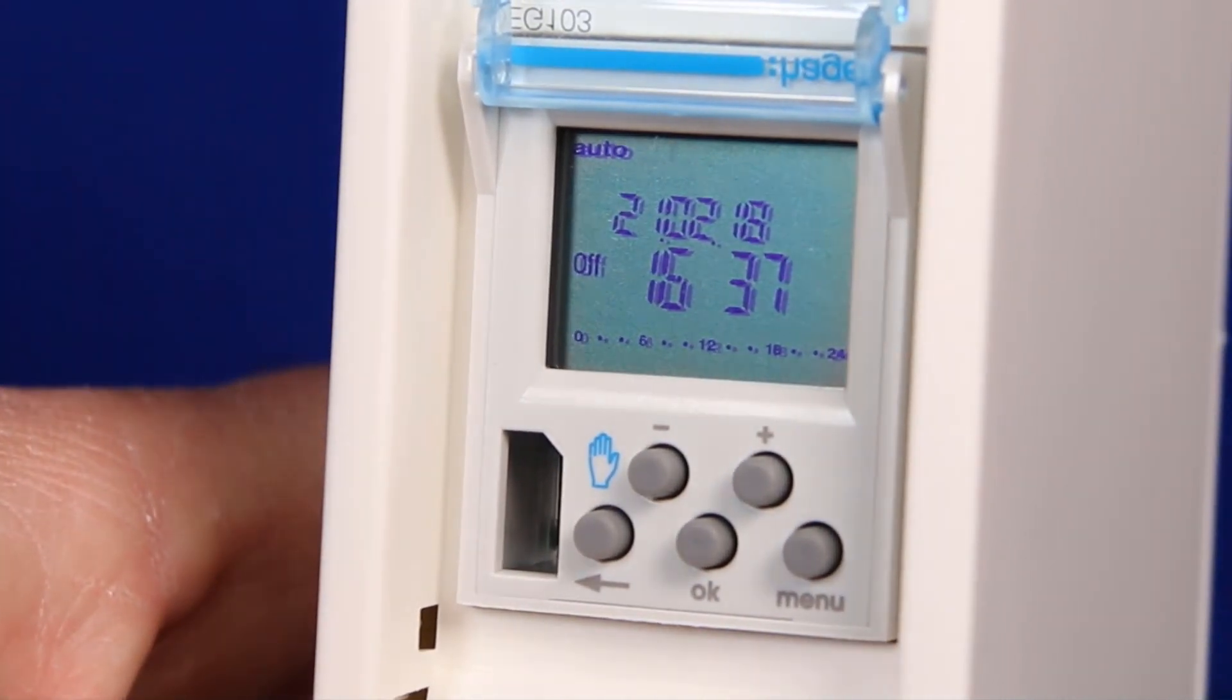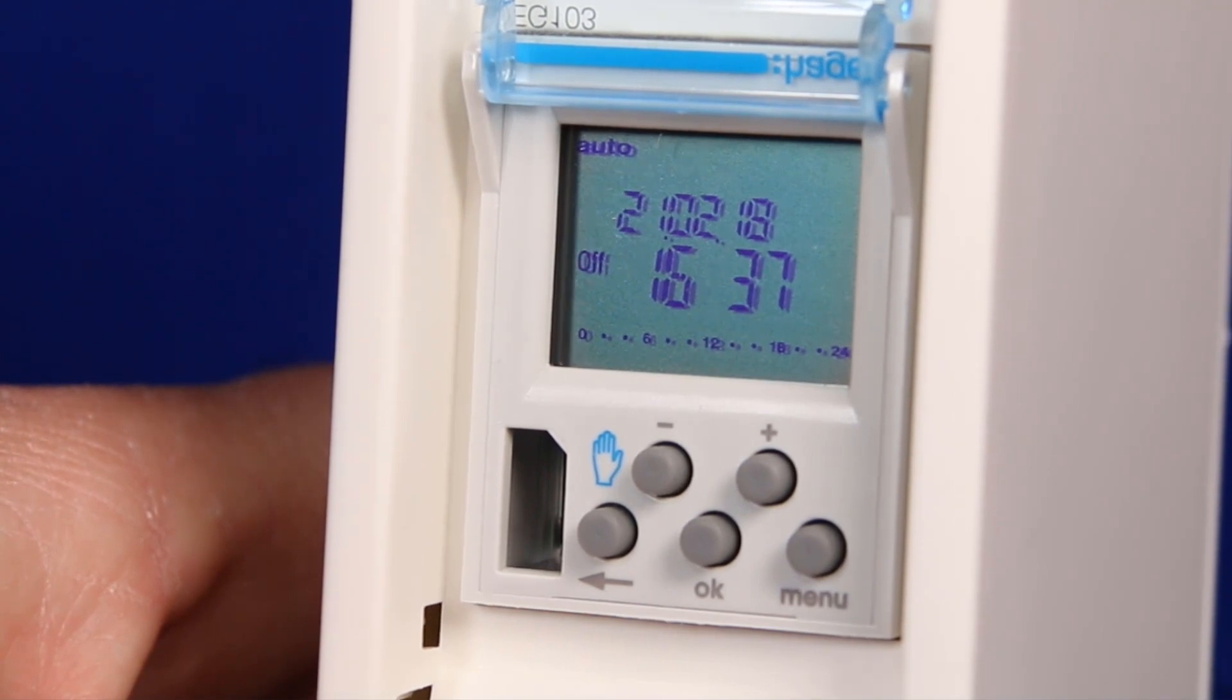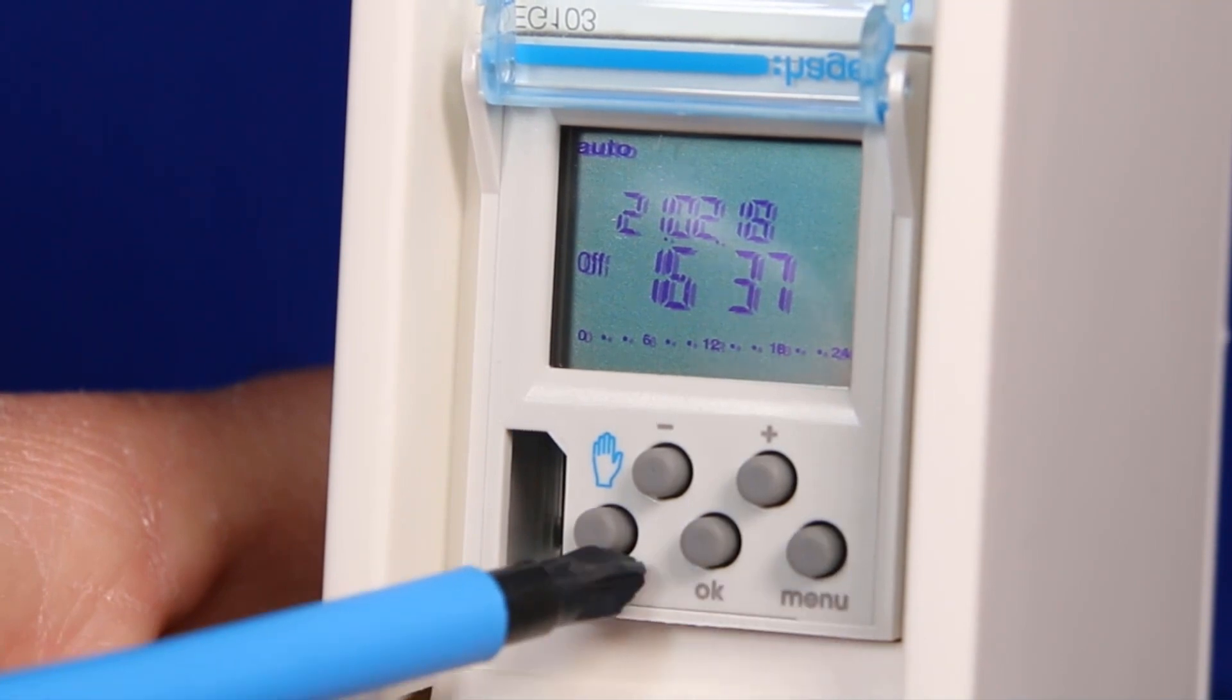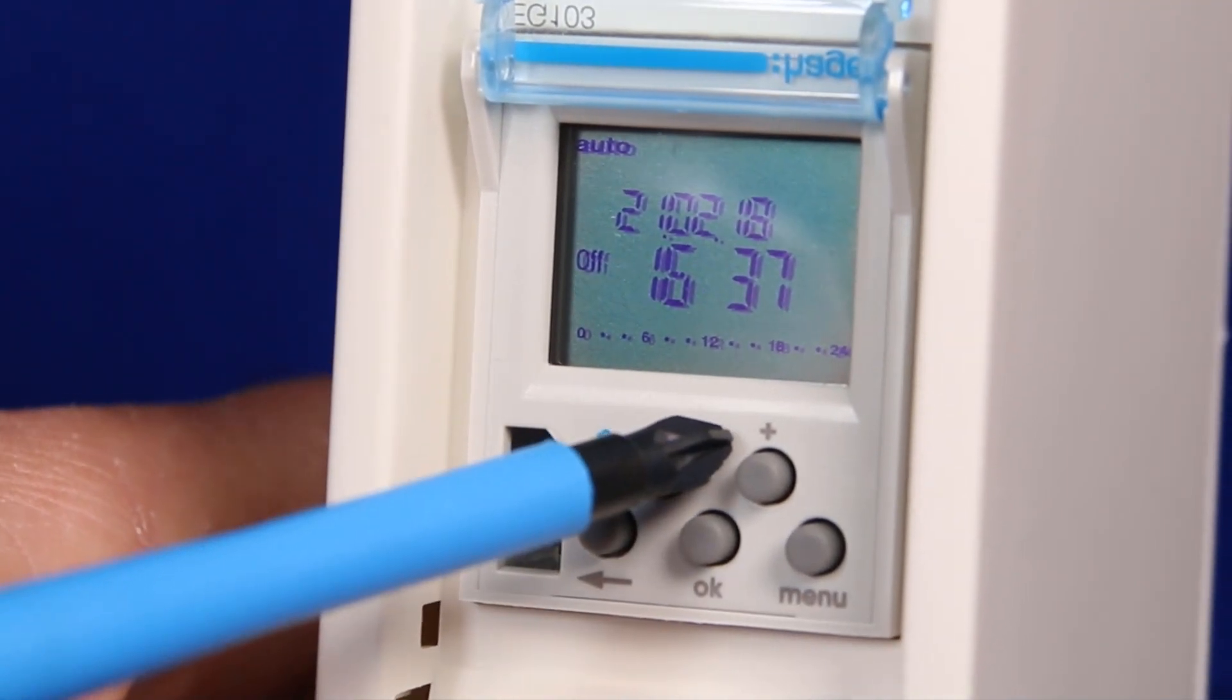Contact Hager or your Hager stockist if you would like to know more about this software. If you don't have a key or this software, however, you will need to use the buttons on the front of the timer.